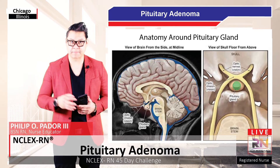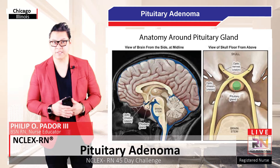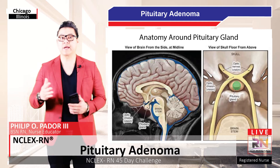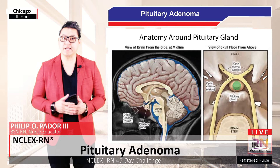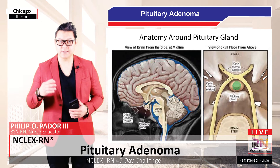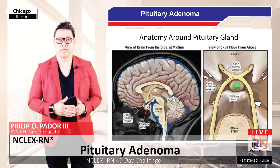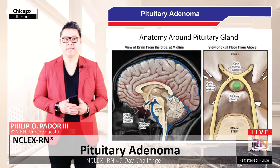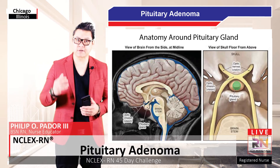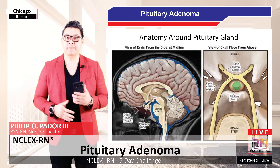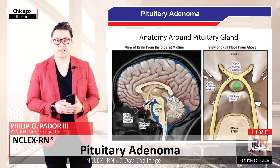Coursing along the sides of the pituitary gland are the paired carotid arteries, which run in the cavernous sinus. The pituitary gland is connected to the area of the brain called the hypothalamus through the pituitary stalk. Directly above the gland is the crossing of the visual fibers coming from the optic nerves, called the optic chiasm.